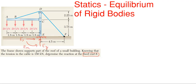Remember, you can assign these assumption arrows in any direction. I could have assumed E sub y downward or E sub x to the left — it doesn't matter. If you do the equations correctly and get a positive answer, you assumed correctly; a negative answer means you assumed the wrong direction.